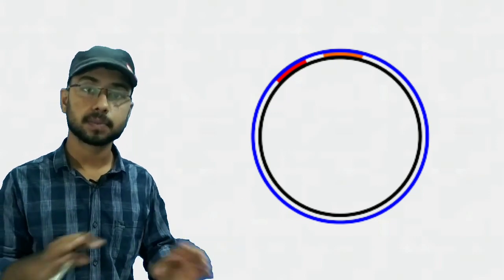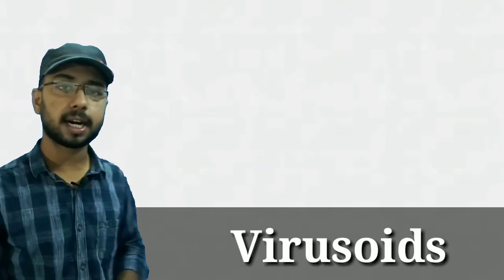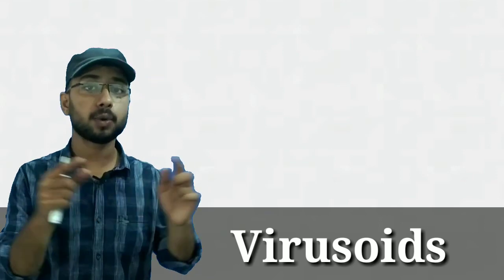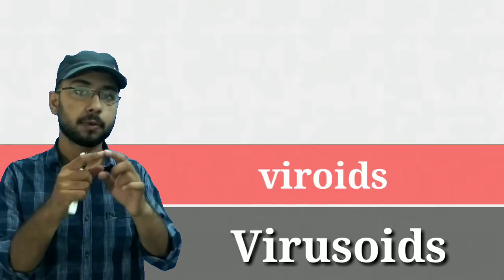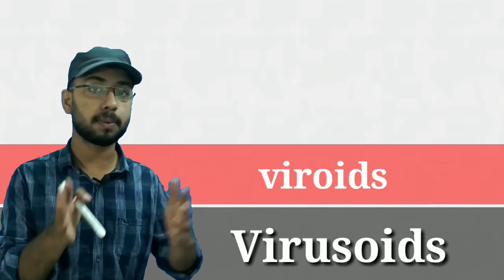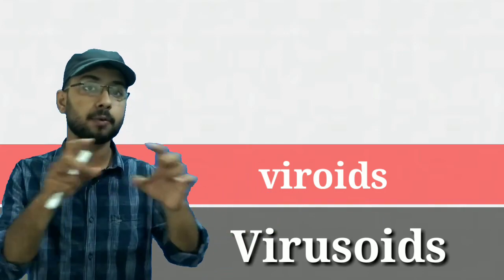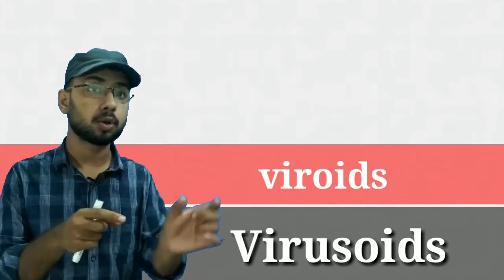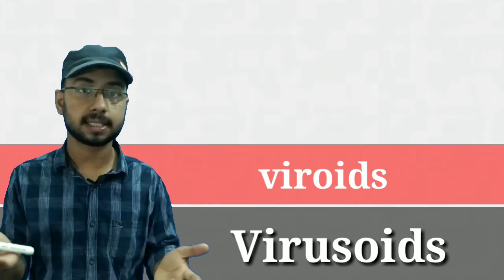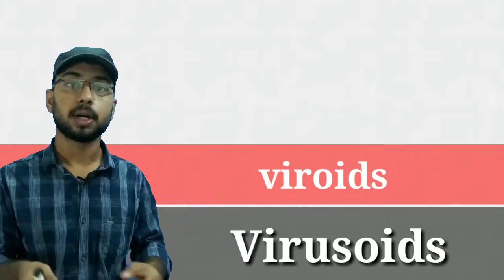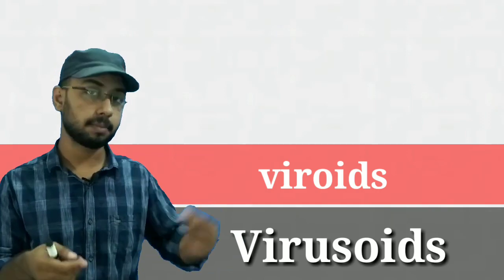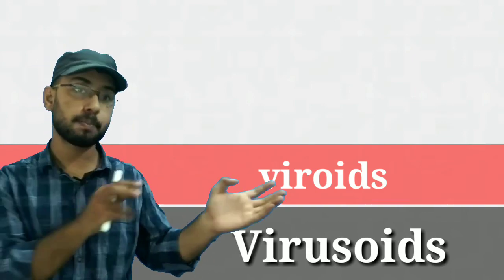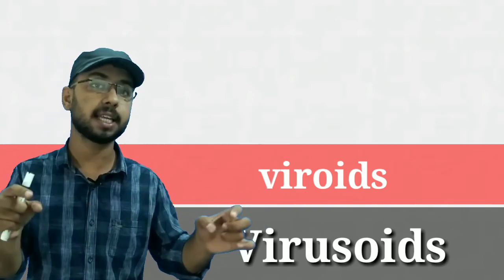The third mnemonic — Virusoids. You can pronounce it as a bigger word: 'viroid' is a small term, 'virusoid' is a bigger term. Since it's a bigger term, it requires something extra — it requires something else to replicate. So from this size comparison, remember that virusoid requires a helper virus to replicate itself. Just compare viroid and virusoid — the longer one needs a helper virus.